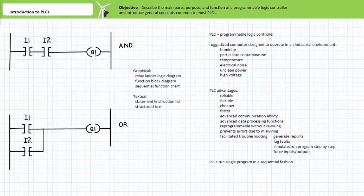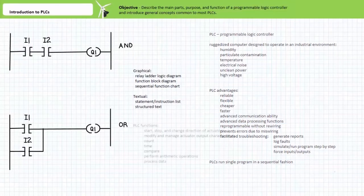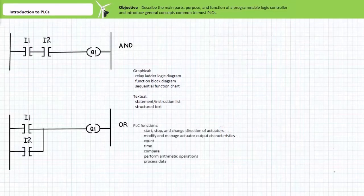Other programming methods include graphical means like function block diagrams or textual ones like structured text. Regardless of the methodology employed, the purpose of a PLC, like traditional hardwire relay-based ladder logic, is to control and coordinate a larger system by starting, stopping, and changing the direction of actuators like electric motors and hydraulic cylinders.